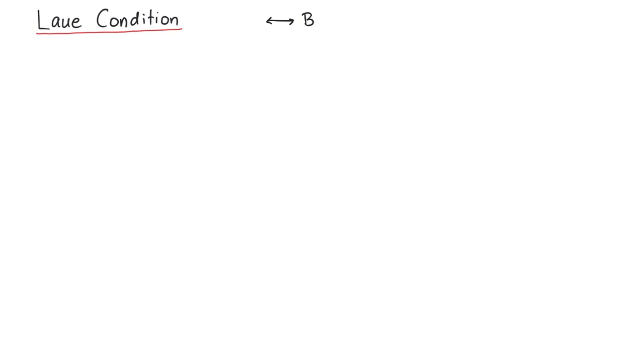In this video, we will explain the Laue condition, which is a more general form of the Bragg condition and describes how waves can scatter at a lattice.